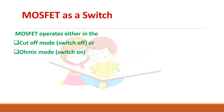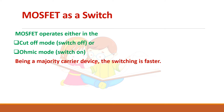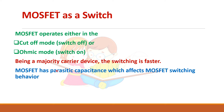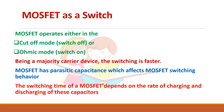MOSFET operates either in cut-off mode or in ohmic mode when operated as a switch. Being a majority carrier device, the time required to eliminate carriers during switch-off is reduced, thereby making switching faster in case of a MOSFET. However, MOSFET has a parasitic capacitance inside its structure, which affects the MOSFET switching behavior because this capacitance needs to be charged and discharged.